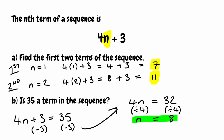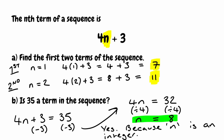So when it asks is 35 a term in the sequence, we can simply say yes, because n is an integer. Therefore we know it's in the sequence.